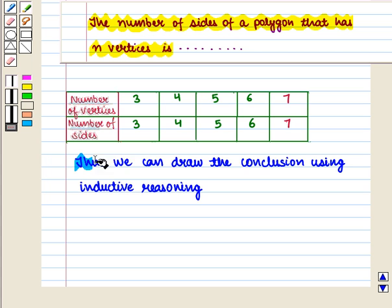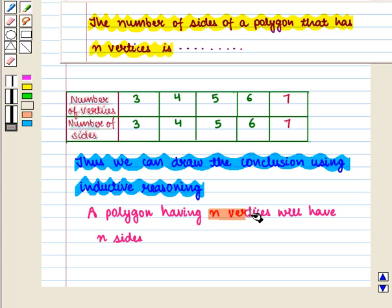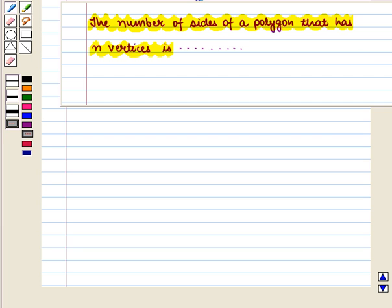Thus we can draw the conclusion using inductive reasoning. That is, a polygon having n vertices will have n sides. Thus our conjecture is, the number of sides of a polygon that has n vertices is n. This is the required answer.